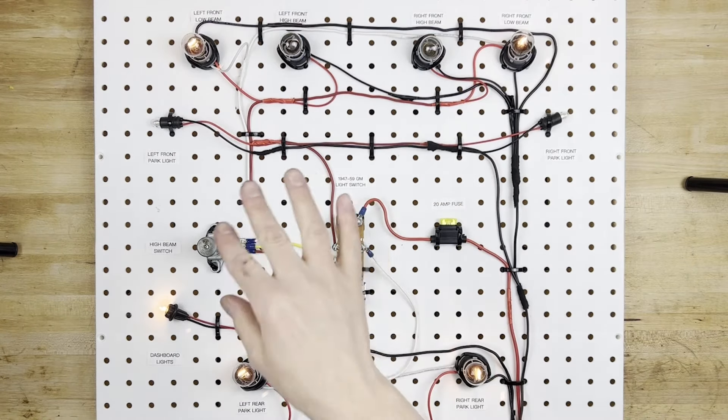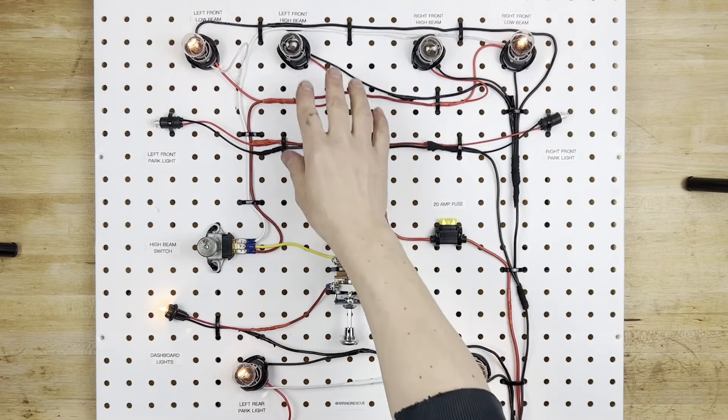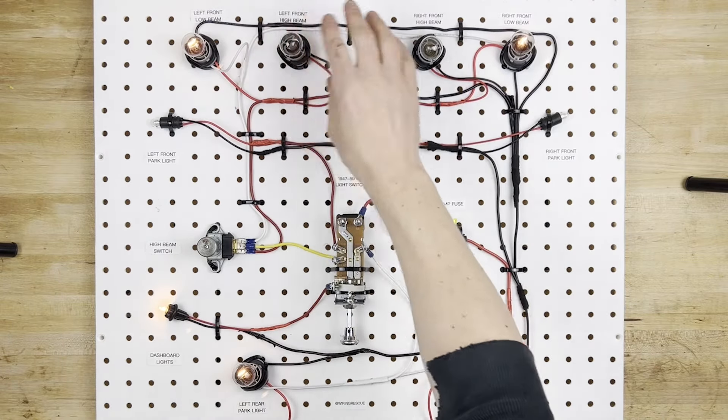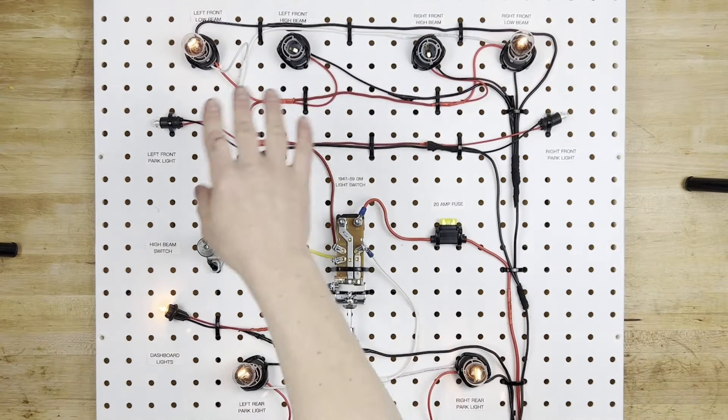Now if by chance your vehicle only has two headlights, it doesn't have four, then you can just not wire in these two like this. We'll just remove the bulbs and this is how it will work.